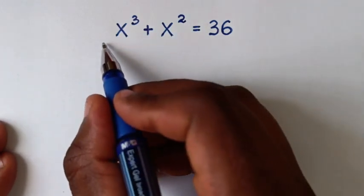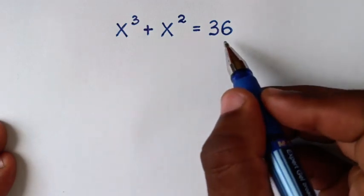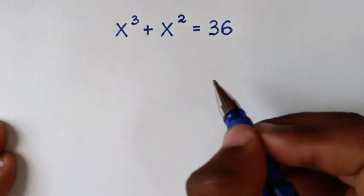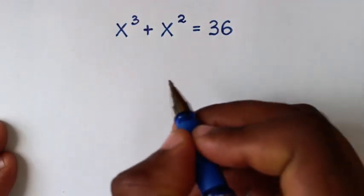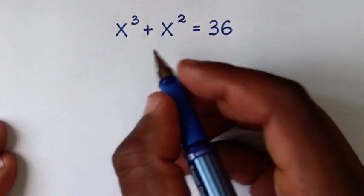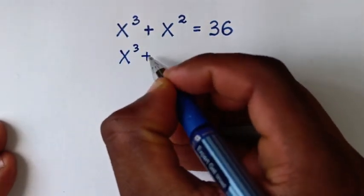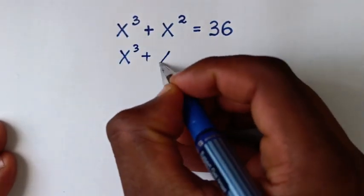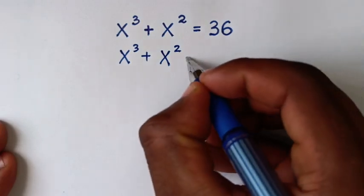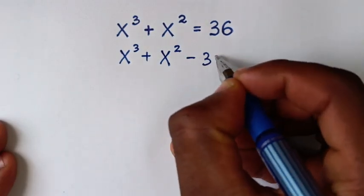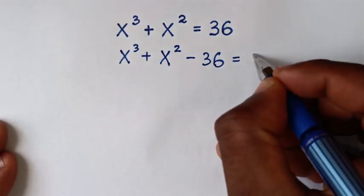To find the values of x from this equation, in the first step, we'll take this 36 to the left side. So it will be x power 3 plus x power 2, we'll take this to this side, so it will be minus 36 is equal to 0.